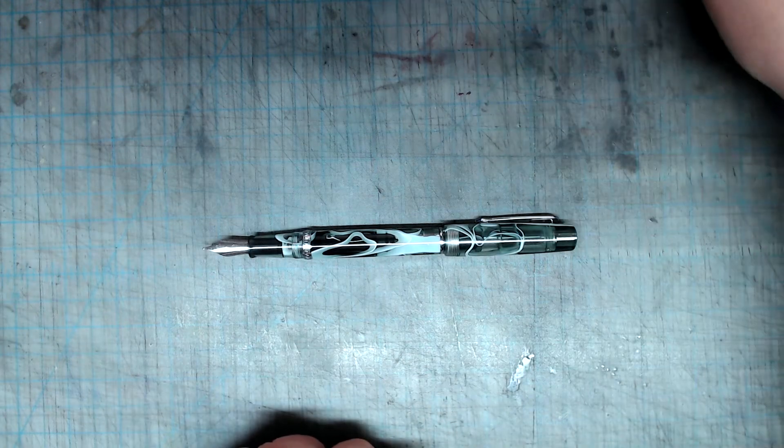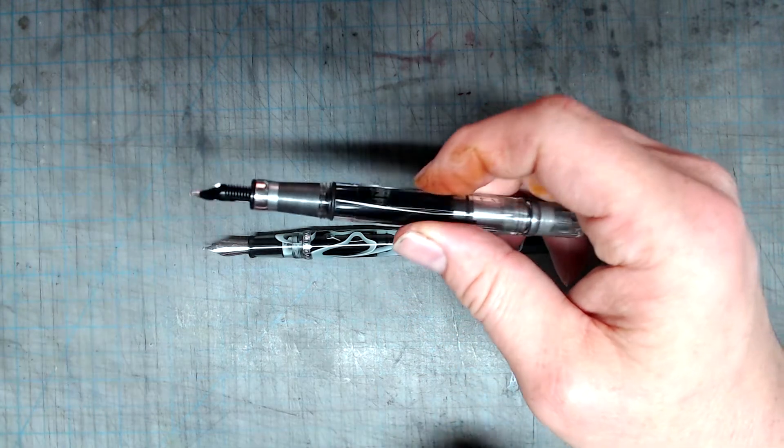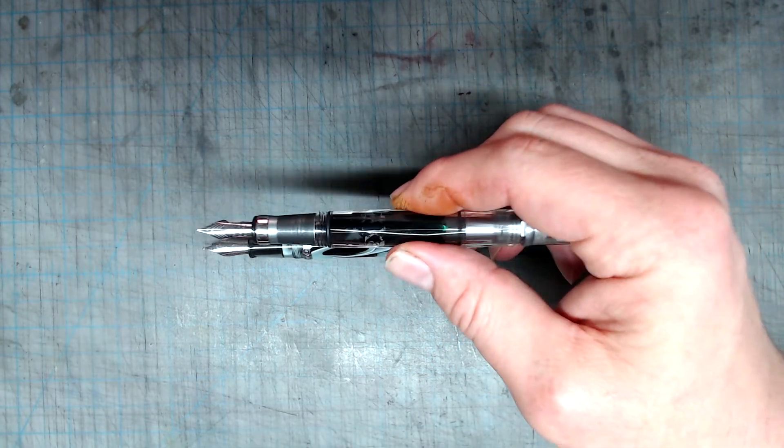Another one of my favorite demonstrator piston fillers is the Twsbi 580 AL, which uses the number 5 nib, a slightly more common size, but still relatively rare.